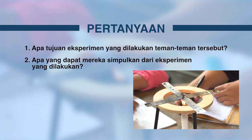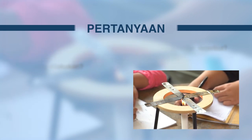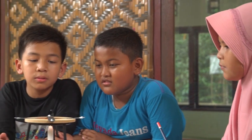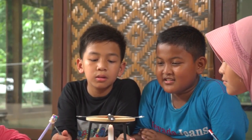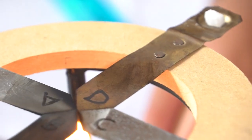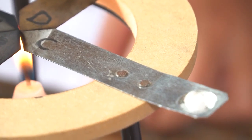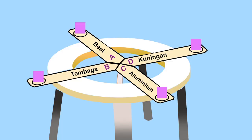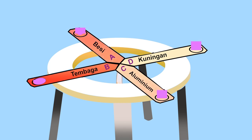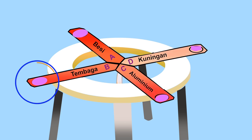Baik sobat Eks Sains, yuk simak pembahasannya. Tujuan eksperimen yang dilakukan teman-teman tadi adalah untuk mengetahui peristiwa perpindahan panas dan untuk menentukan bahan mana yang dapat menghantarkan panas paling baik. Panas lilin yang mengenai pangkal batang akan merambat sampai ke ujung dan mengenai lilin-lilin. Lilin-lilin yang terkena panas akan mencair dan menetes. Sehingga dapat disimpulkan dari keempat bahan di atas, tembaga yang paling baik dan paling cepat sebagai bahan yang menghantarkan panas daripada besi, aluminium, dan kuningan.